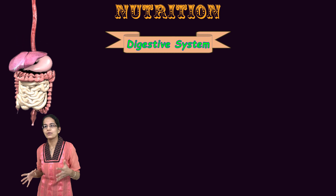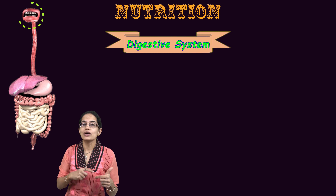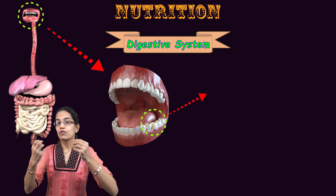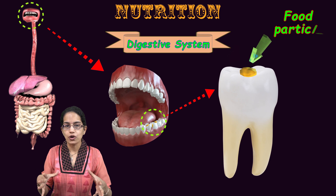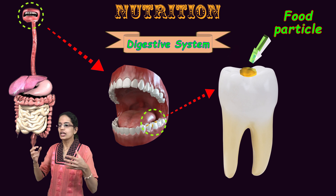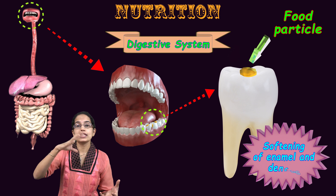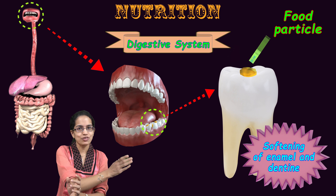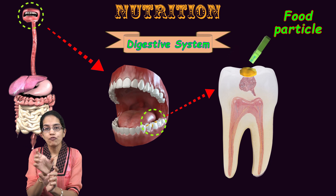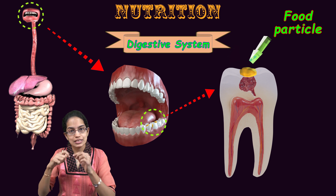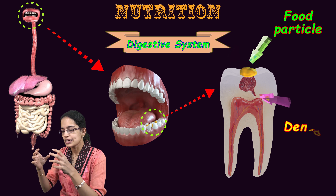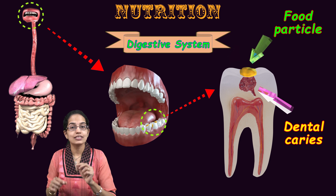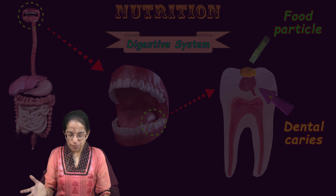An important point about the digestive system: the process starts in the mouth. If food particles remain in the mouth for a prolonged period — usually during the night — there is softening of the enamel and dentine, the layers of the tooth. This affects the health of the teeth, causes softening, and finally demineralizes the enamel, which is one of the major reasons for dental caries.